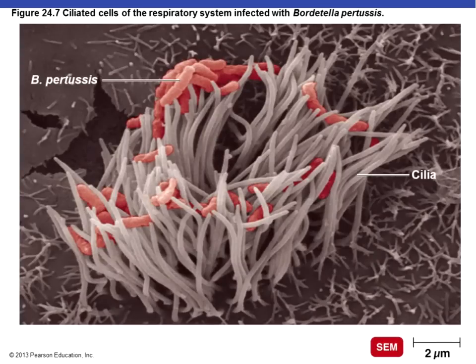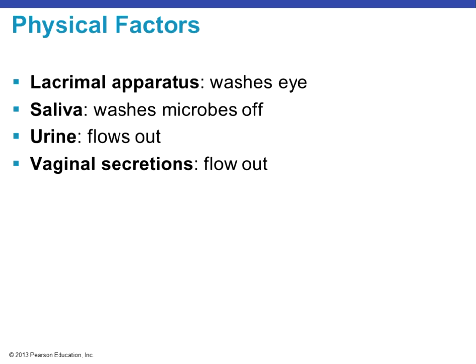Here is a picture of Bordetella pertussis, which is the agent that causes whooping cough, trapped in the ciliated cells of the respiratory system. From looking at it, we can tell that it is a rod-shaped organism.